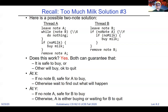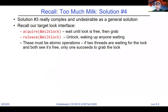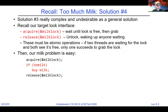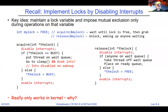We reminded ourselves why locks were appealing, because what we really wanted is a simple solution where we acquire a lock, do the critical section, and release the lock. If we could figure out how to build a lock that gave us this sort of uniform API, we would be in much better shape.